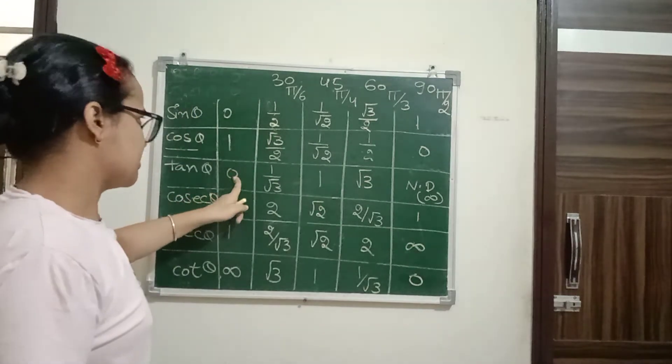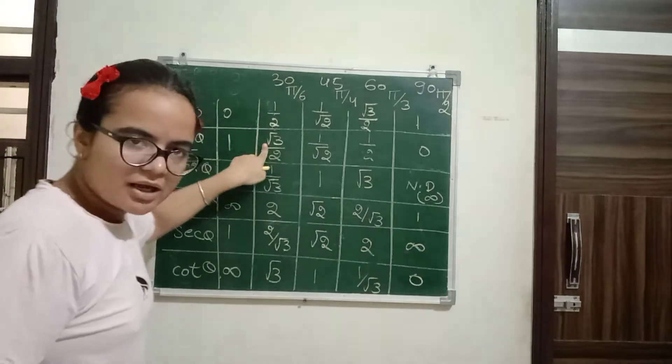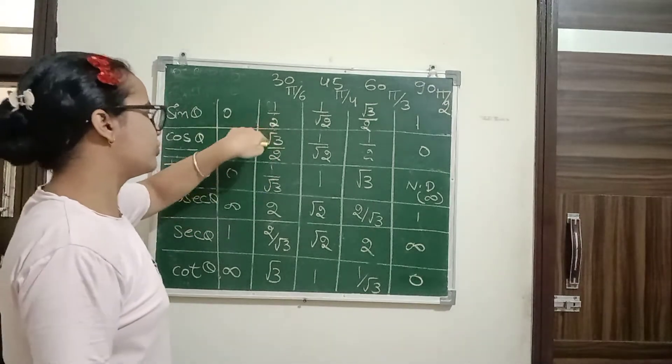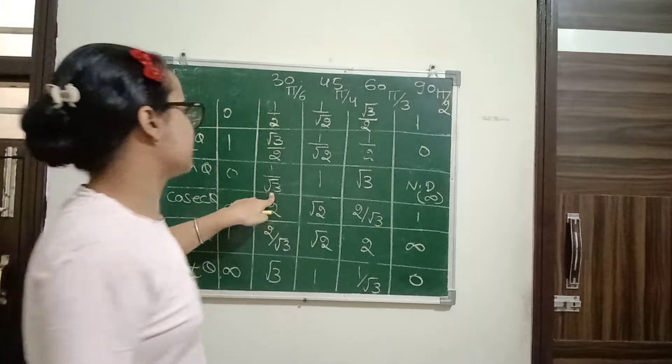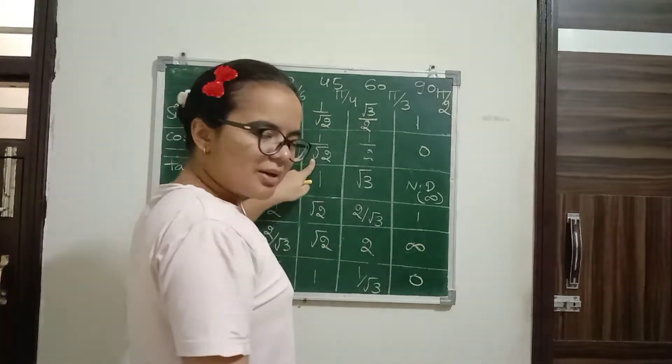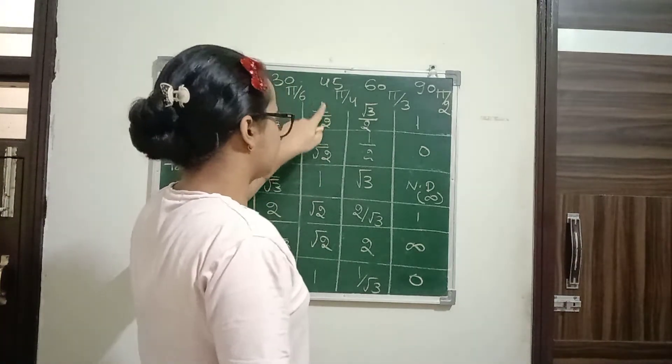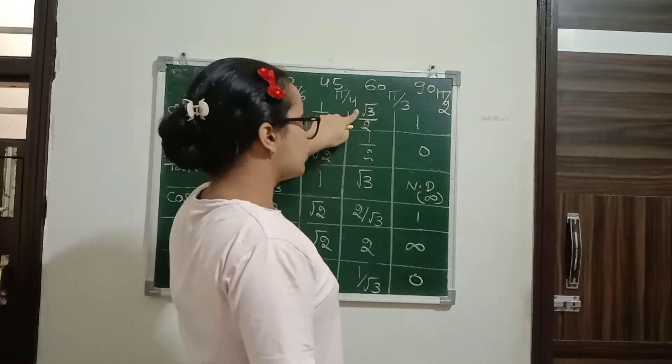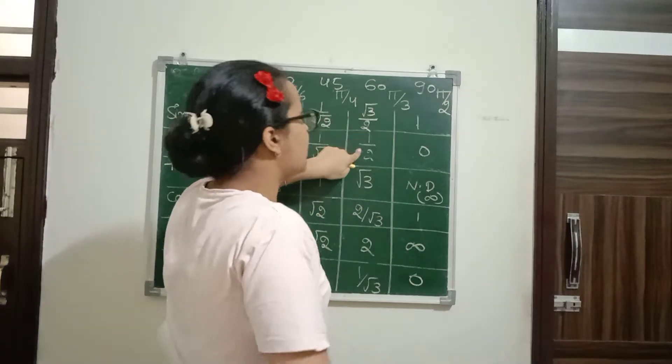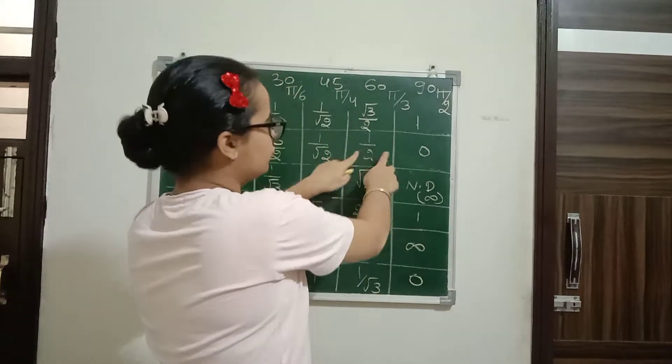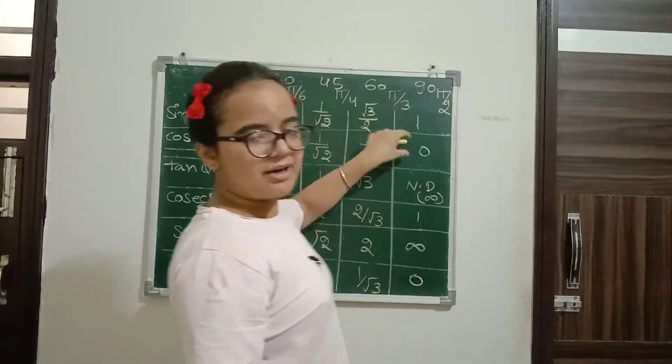One divided by zero is one. One by two divided by root three by two, the twos cancel, giving one by root three. One by root two divided by one by root two, root two cancels giving one. Root three by two divided by one by two gives root three. One divided by zero, anything divided by zero is not defined.